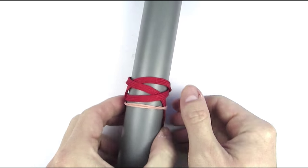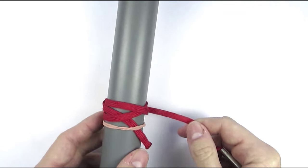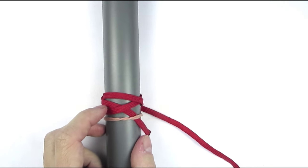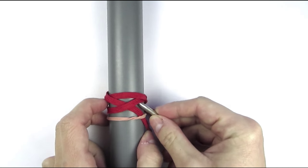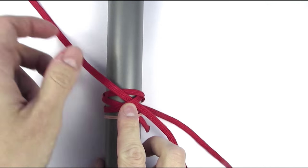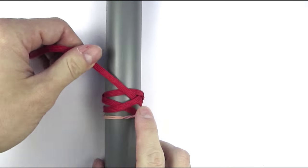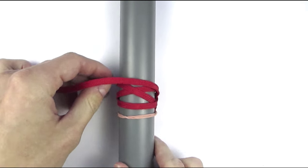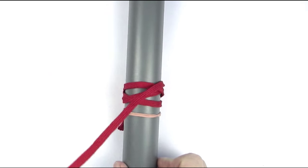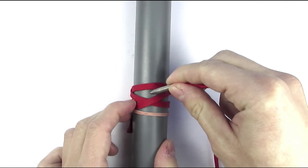We're going to enlarge it by following the standing end, going under then over, then back into the knot, into the bight to our left, going over, under, then over.